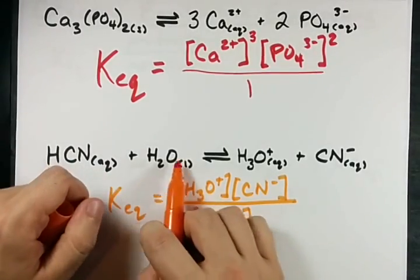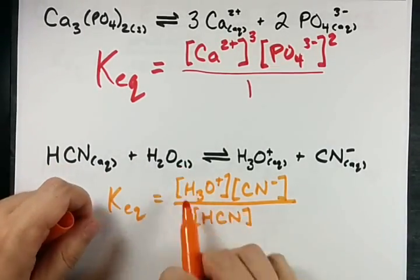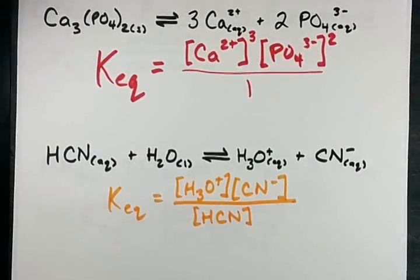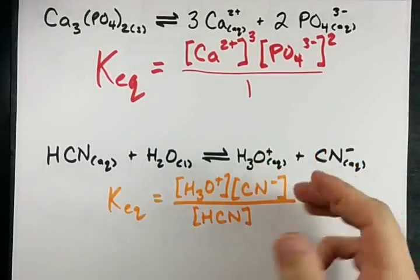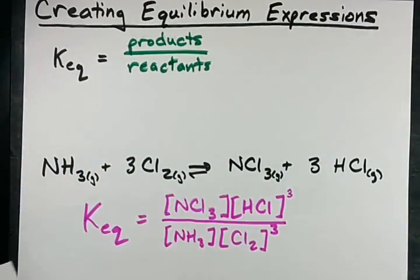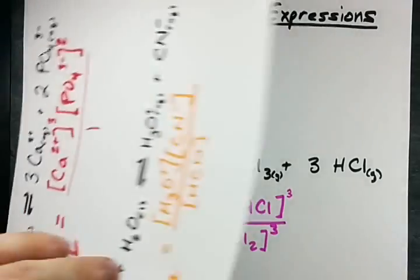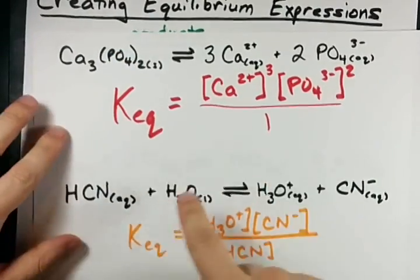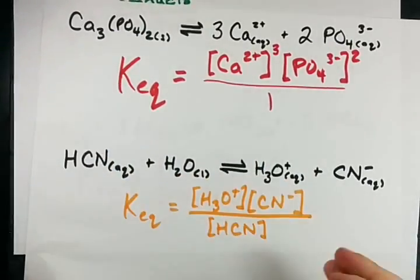Wait, I don't include water because it's a liquid. So I'm done here. You guys get it? It's pretty straightforward. Products over reactants, coefficients become exponents, and you don't include solids or liquids in your KEQs.